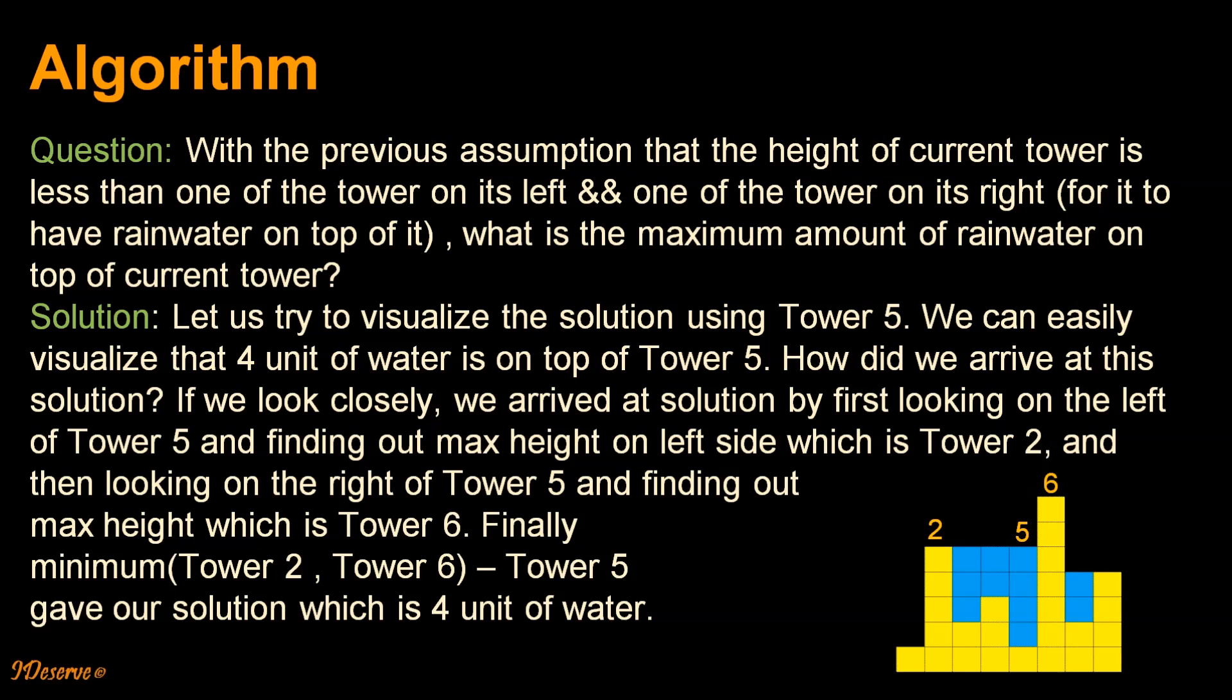If we look closely, we arrived at solution by first looking on left of tower 5 and finding out maximum height on left side which is tower 2, and then looking on the right side of tower 5 and finding out maximum height which is tower 6. Finally, we did a minimum of height of tower 2 and height of tower 6 subtracting height of tower 5, which gave our solution which is 4 units of water.